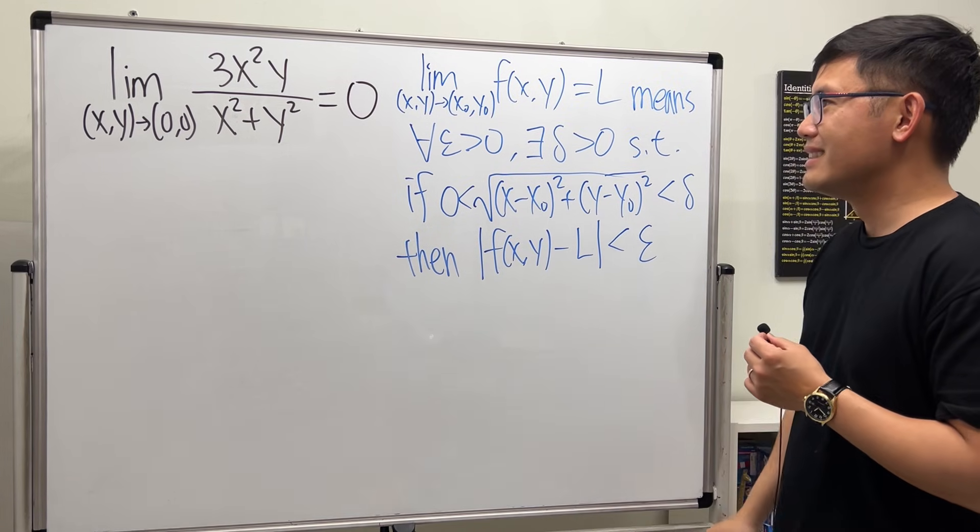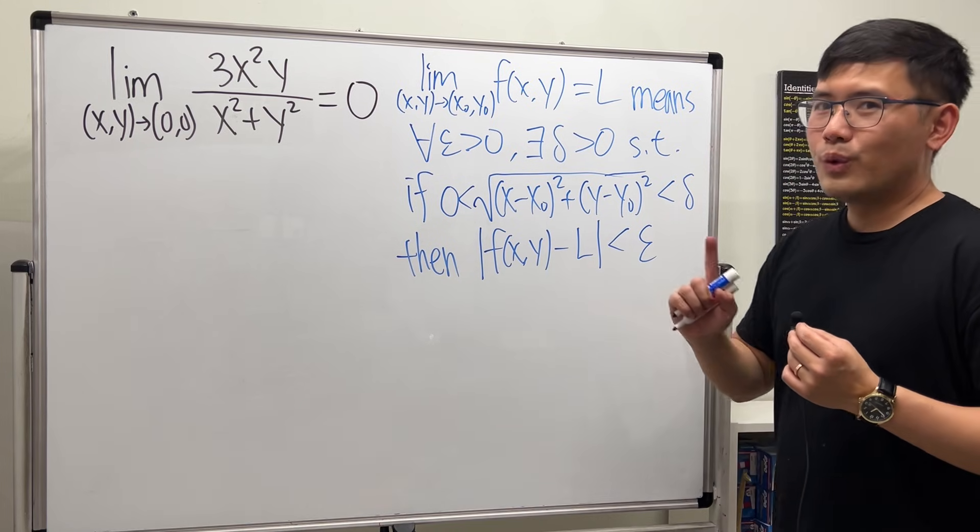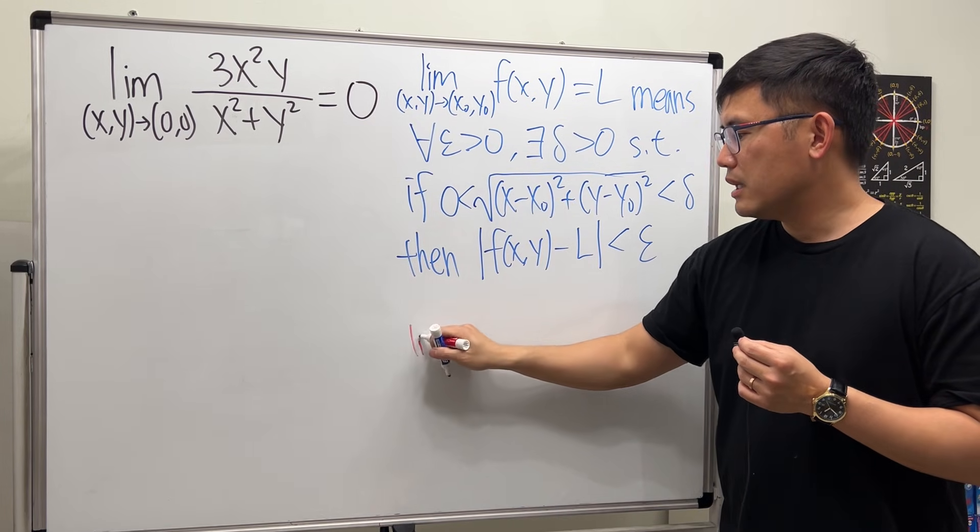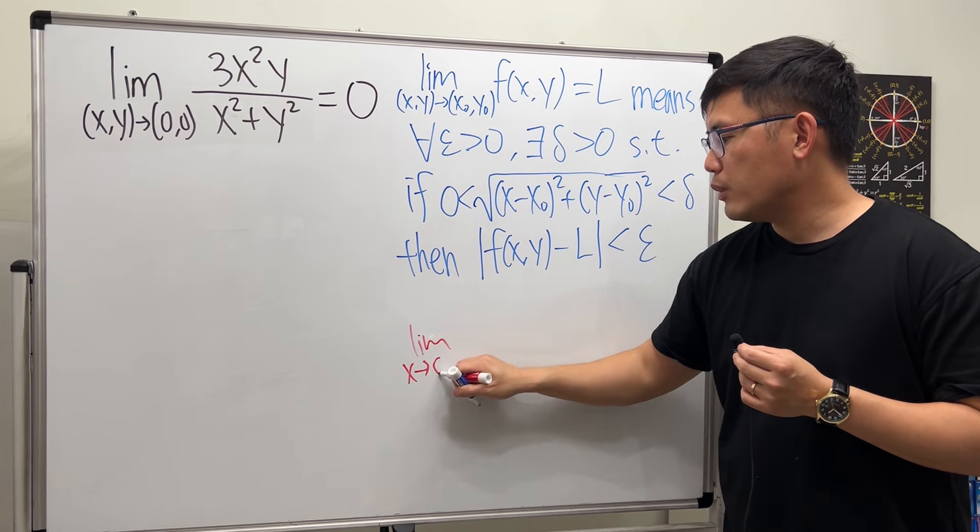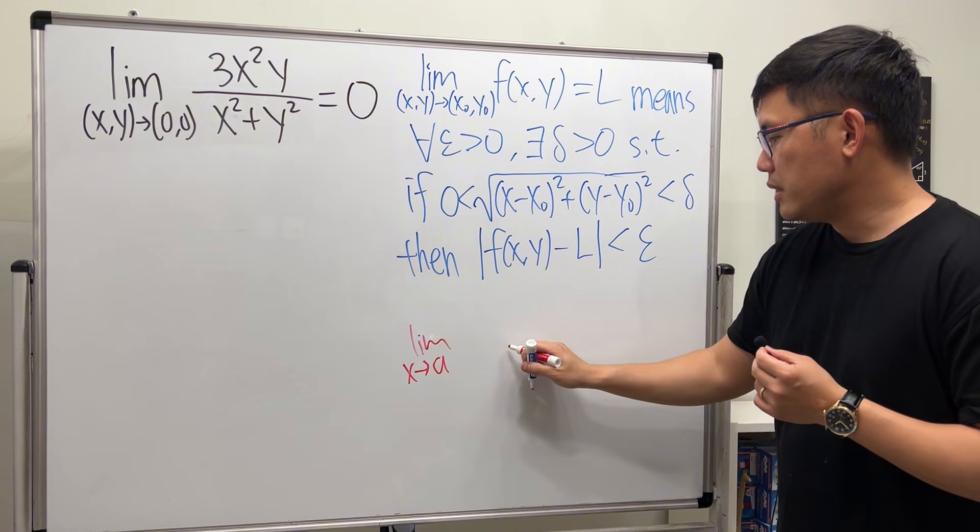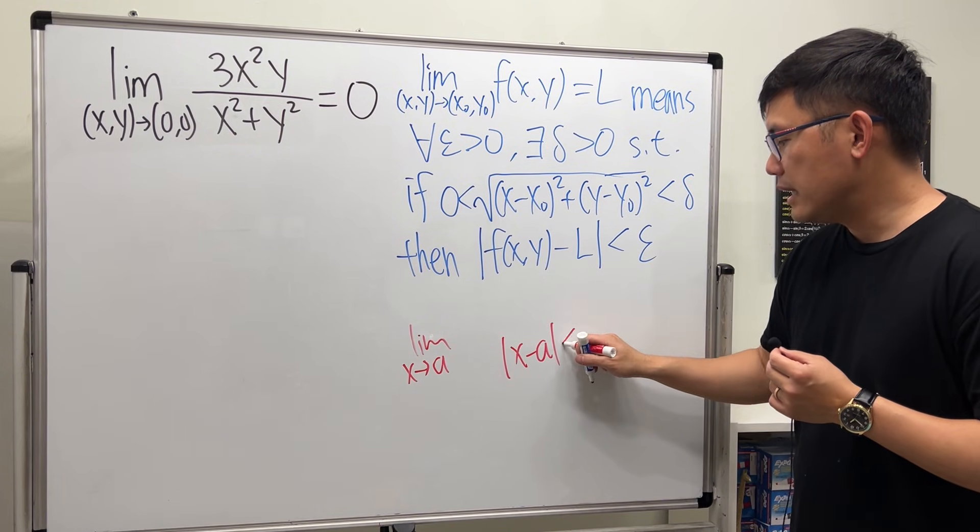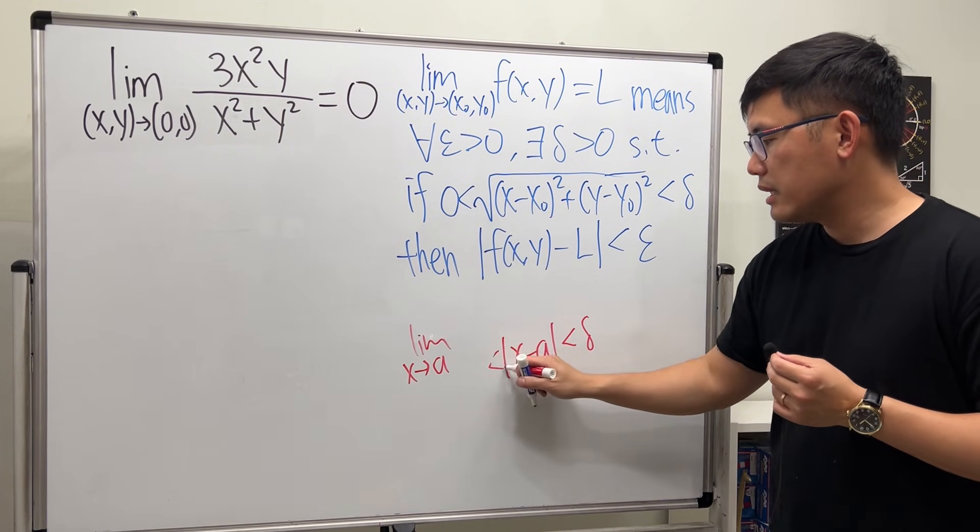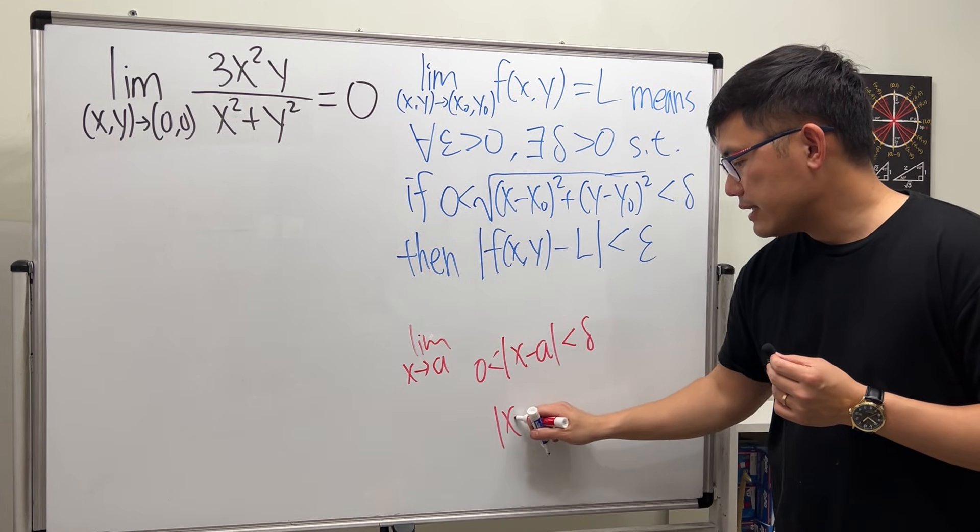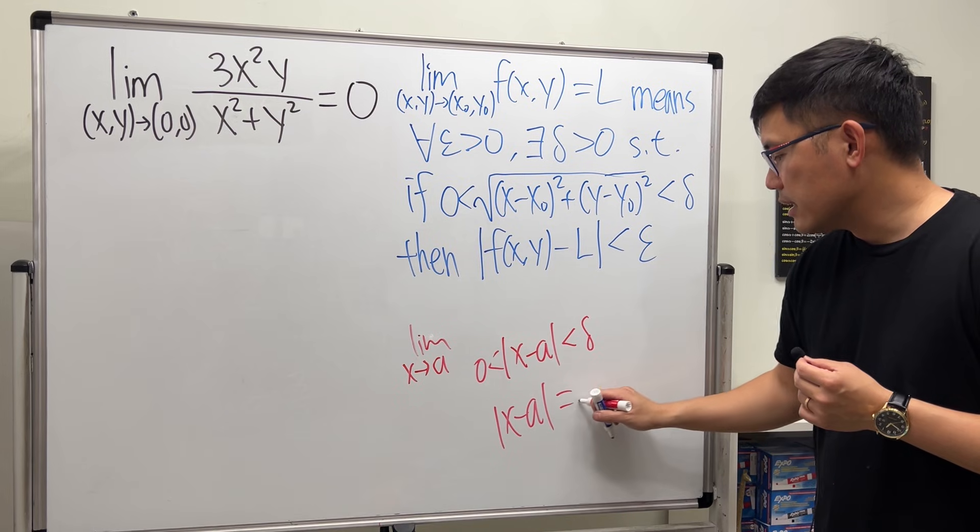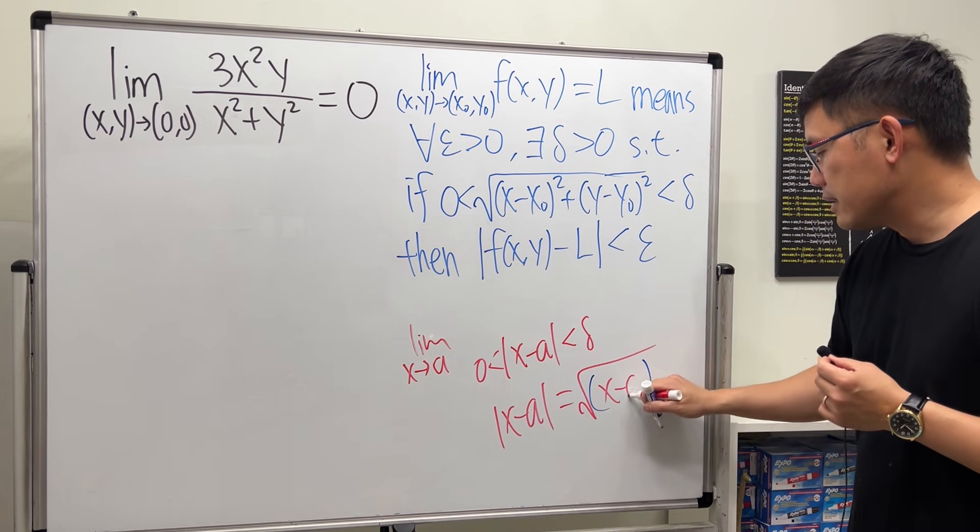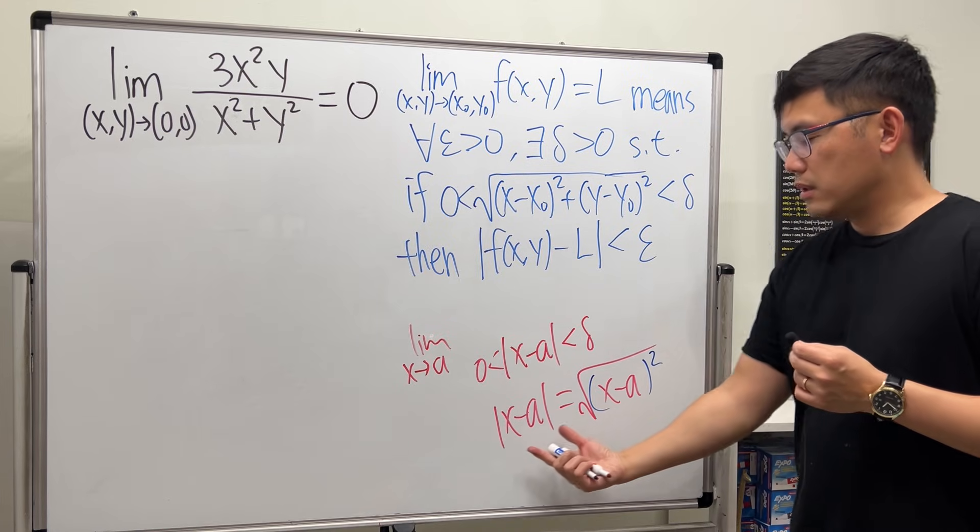All right? By the way, one thing to remember. If we just have, let's say, the limit as x approaching a, which is the single variable case, this part was written to be the absolute value of |x - a| to be less than delta, yeah? Absolute value of |x - a|, we can write this as the square root of (x - a)² squared, yeah?